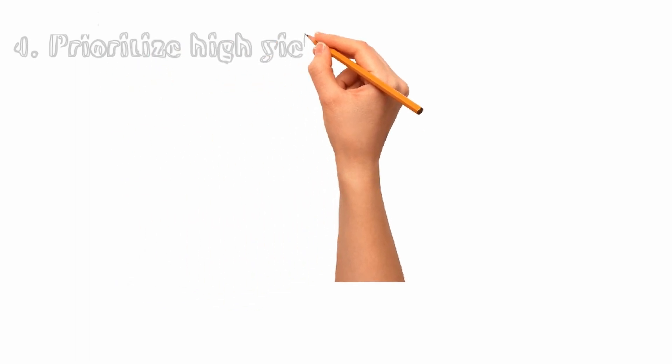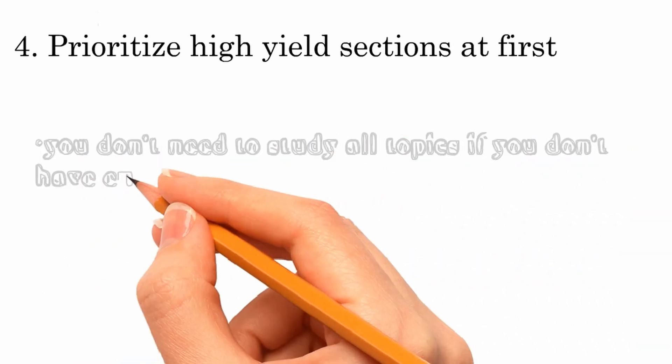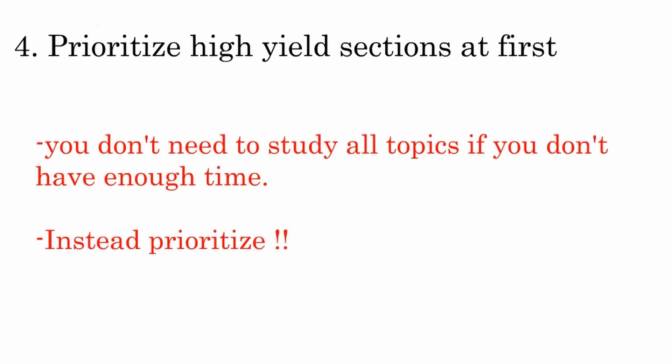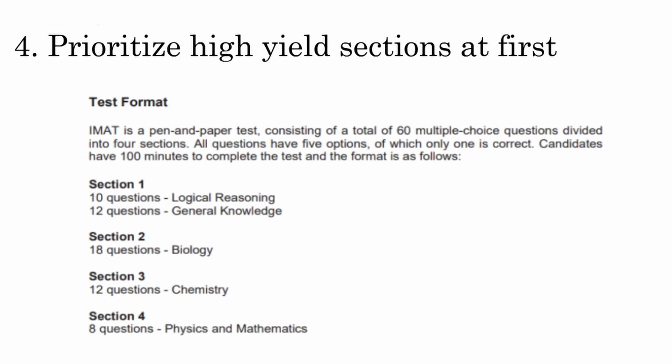The next way is to prioritize high-yield sections of IMAT at first. Remember that there are 60 questions of which answering only 30 correctly can guarantee you a place in many universities. You don't need full 90 marks so you don't have to study all the IMAT topics. For example, there will be just 8 questions from physics and maths so it's not a good idea to work hard on them in the beginning because you have to utilize your time correctly. If you are not familiar with the Italian and European history and culture you can still get enough marks by leaving the section.